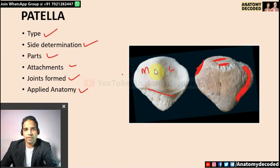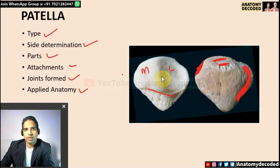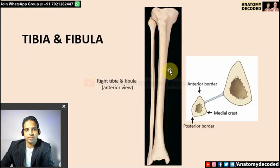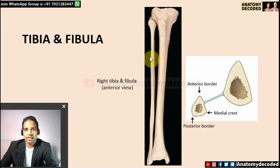Applied anatomy of patella: since it is a sesamoid bone, it lacks periosteum, so fractures of the patella are difficult to heal. Now let's move on to the bones of the leg. In the leg there are two bones: the medial bone is tibia and the lateral bone is fibula.